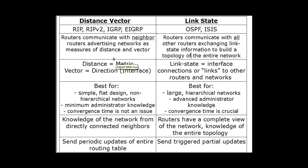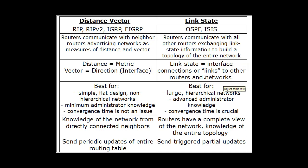In Distance Vector, distance refers to the metric — for example, in RIP, that would be hop count: how many routers you have to pass through to get to a network. Vector means direction, which with routers means which interface you're going to go out of. With Link State, the term refers to the interfaces on the routers — the links to other routers and networks — and the state of the link or connection to another network. Those links can go up or down.